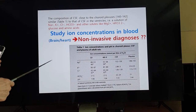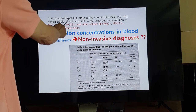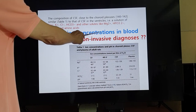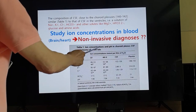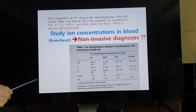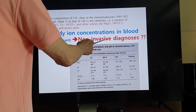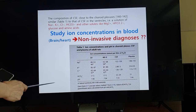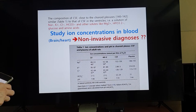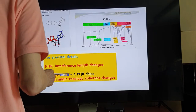For brain studies, cerebrospinal fluid is very important, and you also need to study ion concentrations in blood. Once you are able to use these particular chips, non-invasive diagnosis may become possible in the future.